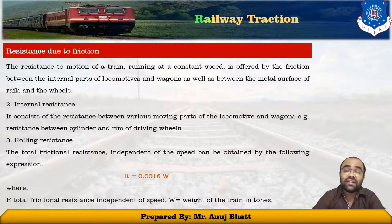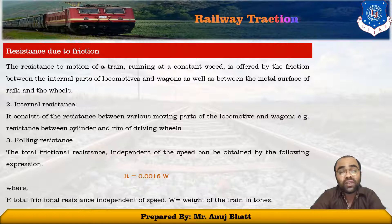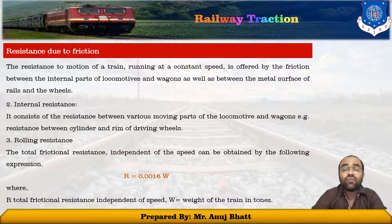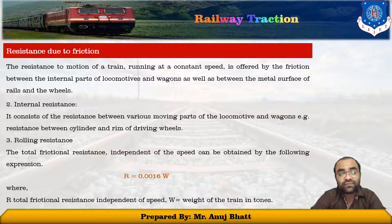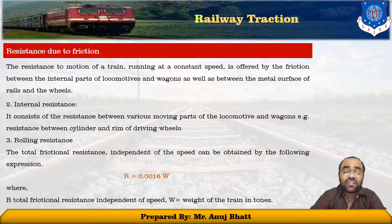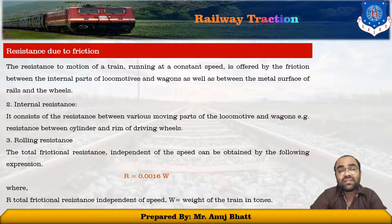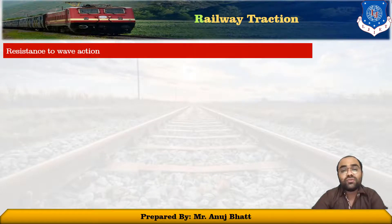Another resistance is the internal resistance, which consists of resistance between the various moving parts of the locomotives and the wagons. An example is the resistance between the cylinder and the rim of driving wheels, called internal resistance. Rolling resistance occurs due to the railway interaction on account of the movement of steel wheels on steel rails. Total friction resistance, independent of speed, is obtained by the expression r = 0.0016w, where r is the total frictional resistance independent of speed and w is the weight of the train in tons.